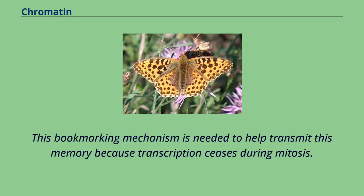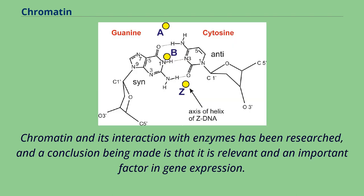Bookmarking is an epigenetic mechanism believed to be important for transmitting to daughter cells the memory of which genes were active prior to entry into mitosis. This bookmarking mechanism is needed to help transmit this memory because transcription ceases during mitosis. Chromatin and its interaction with enzymes has been researched, and a conclusion being made is that it is relevant and an important factor in gene expression.